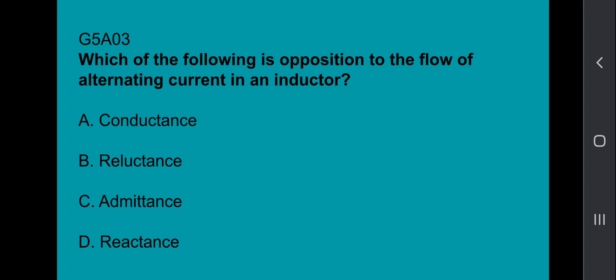G5A03, which of the following is opposition to the flow of alternating current in an inductor? That would be reactance. G5A04, which of the following is opposition to the flow of alternating current in a capacitor? Reactance.